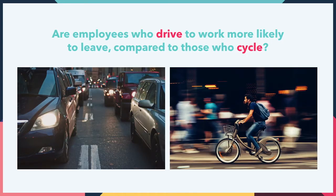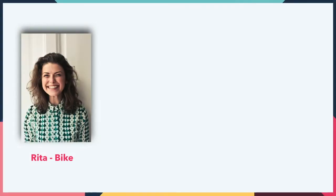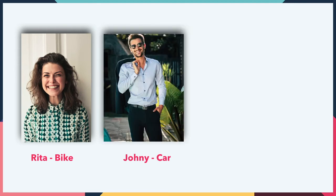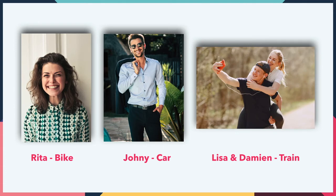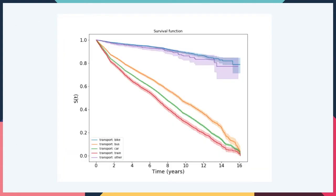Back to our question: are employees who drive to work more likely to leave compared to people who cycle? For this video, I have engineered a rather contrived dataset of people with certain biases towards different transport methods. Rita takes her bike to work because she feels there's already too much pollution, while Johnny drives to prevent messing up his hair. Lisa and Damien live together, work together, and take the train together. Now we can simply compute our survival function for each group and then compare them.